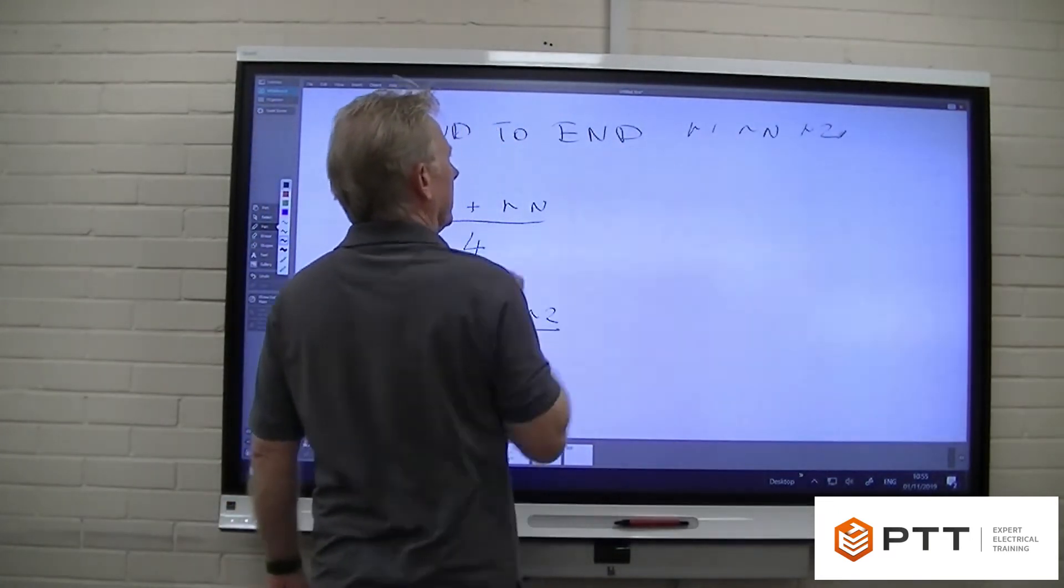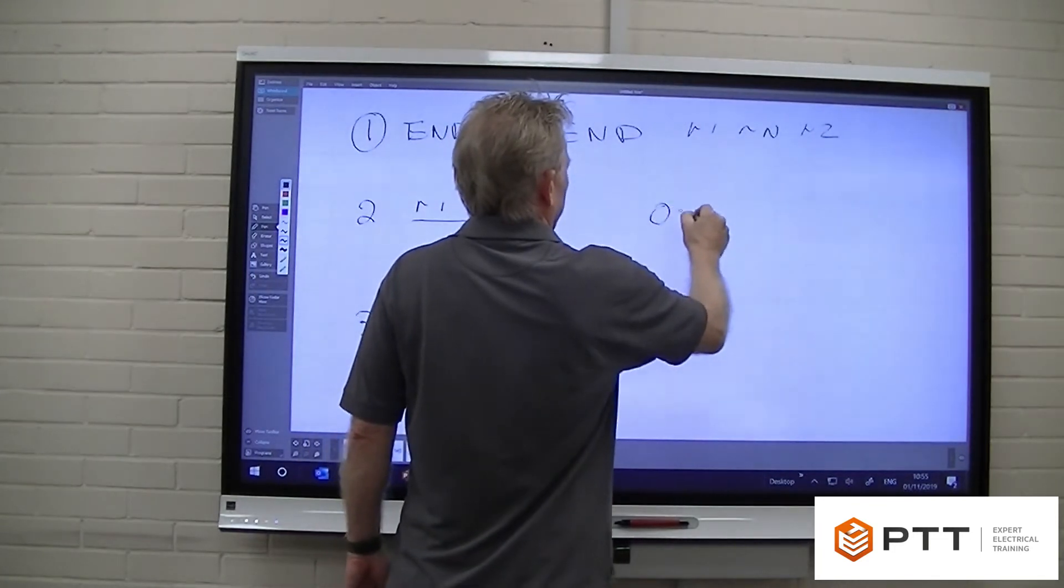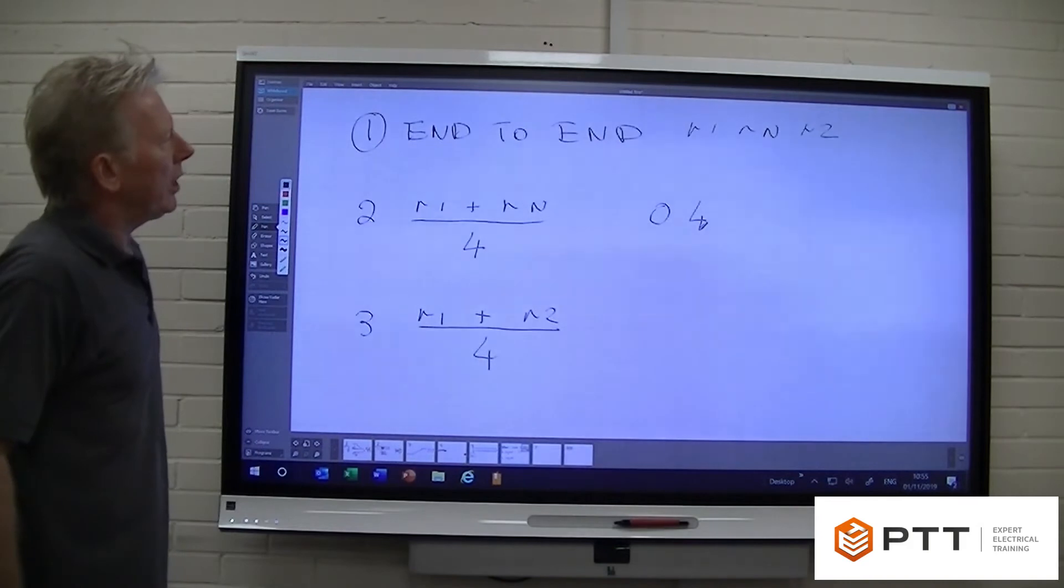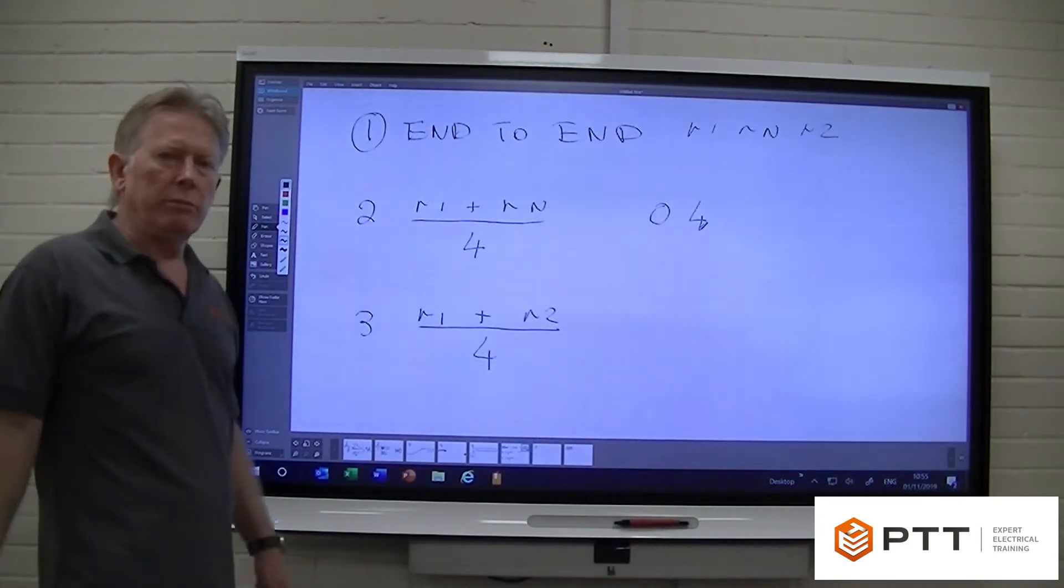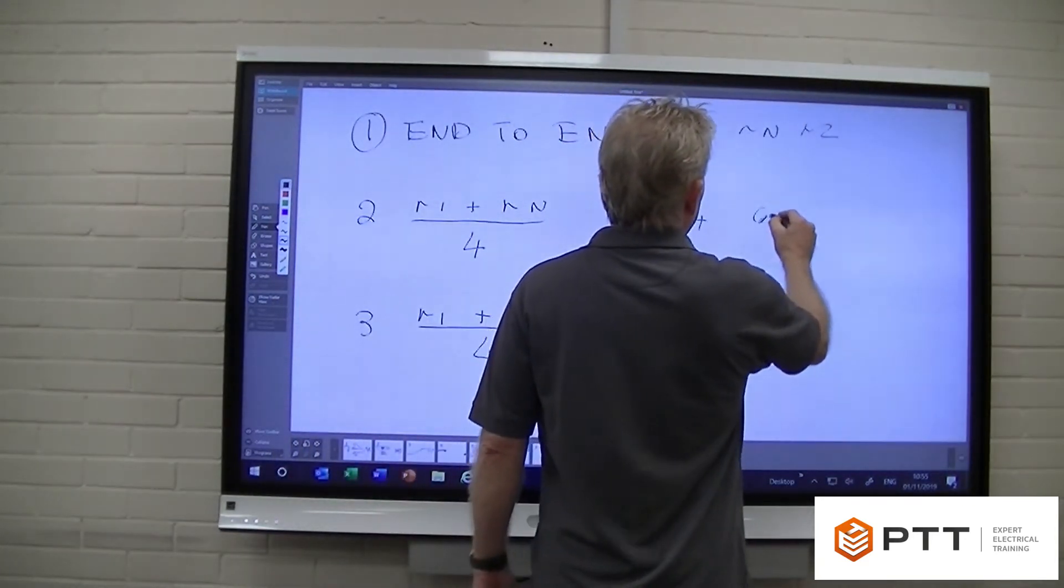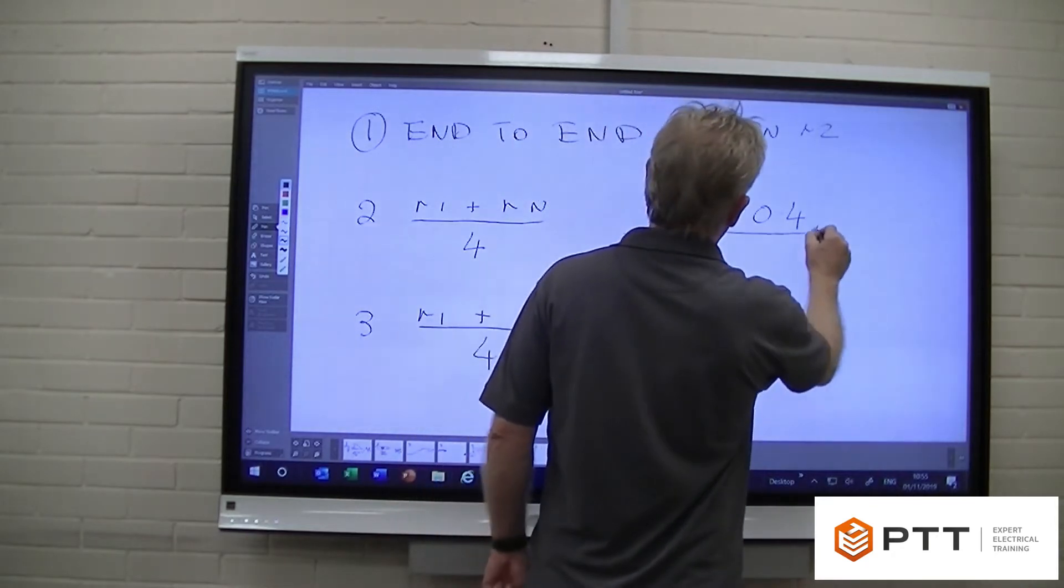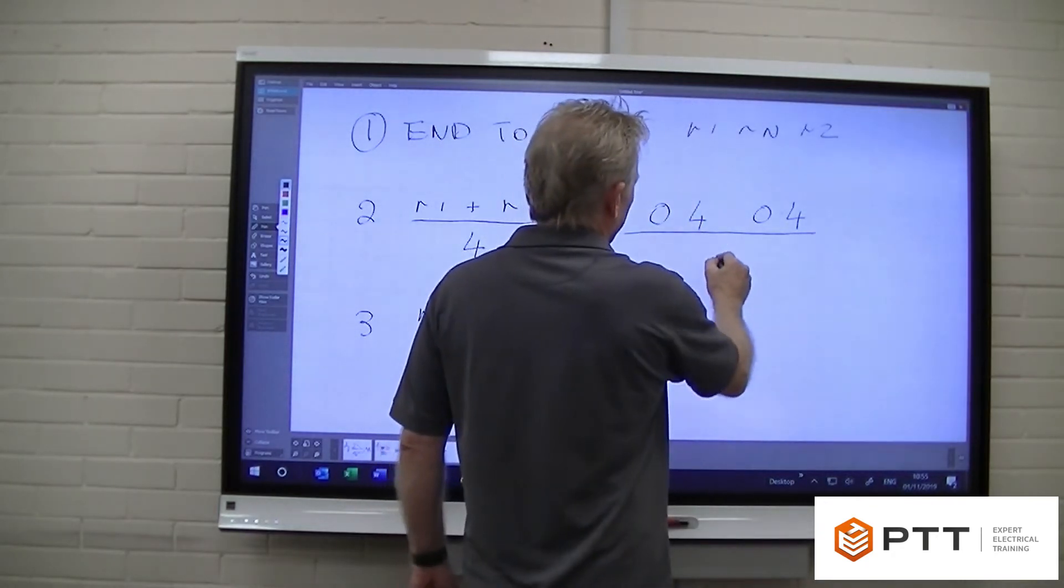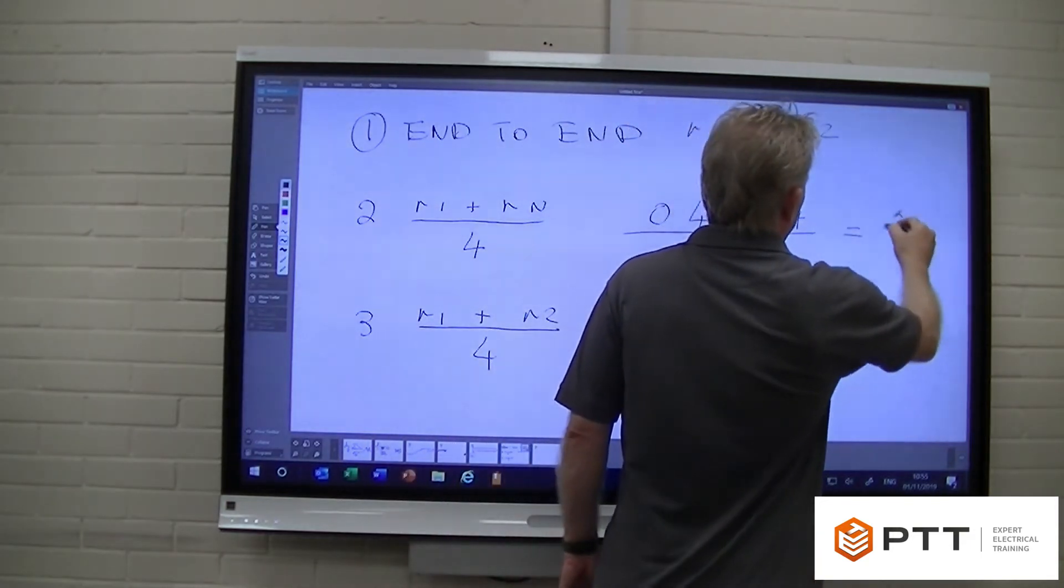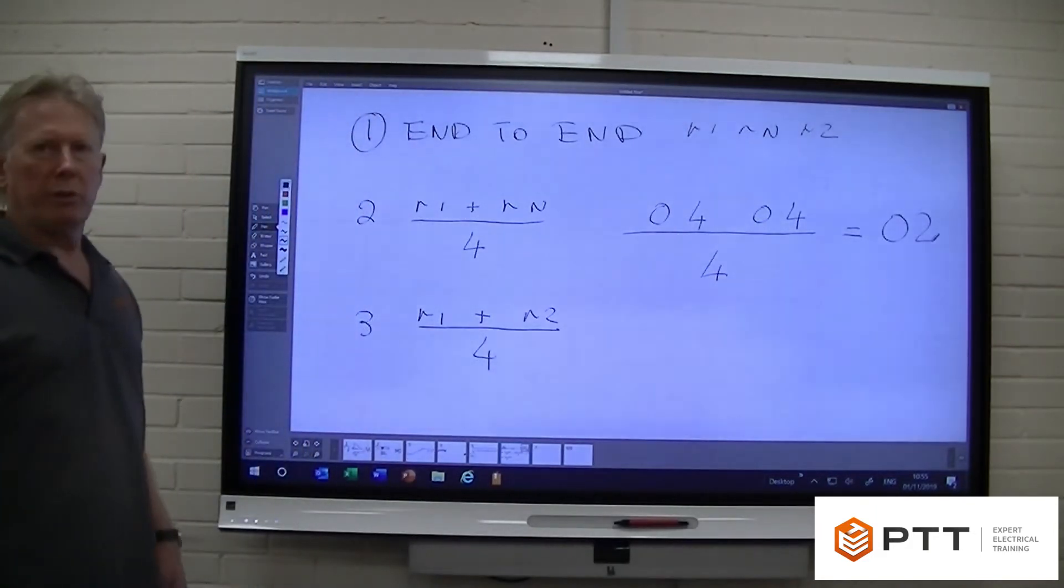So what I'm actually going to do is let's say that we measure r1 as 0.4 ohms for instance. Now rn is really the same cable going by the same route, so it should really be very much the same. Let's say that's 0.04. If we now divide that by four, that gives us 0.2 ohms. So when we do our cross connection, we should be able to measure 0.2 ohms at each socket.